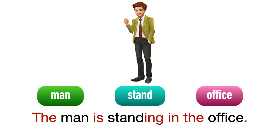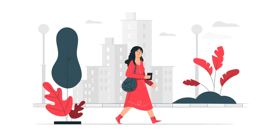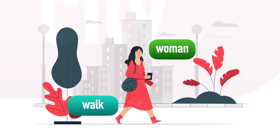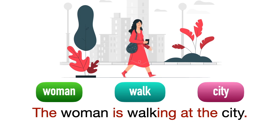Next example: woman, walk, city. The woman is walking at the city. Walk — berjalan adalah perbuatan sendirinya. Tiada object di situ.